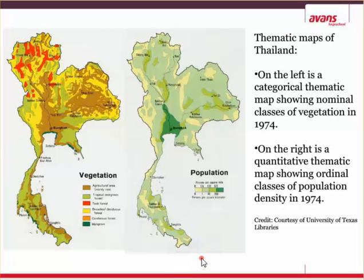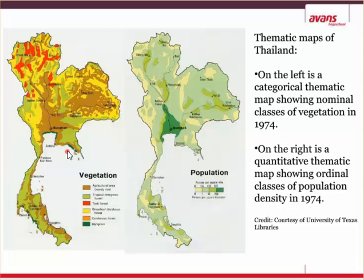Going back to Thailand as our example, here is a thematic map that is very different from the reference map we just saw. On the left, it shows classes of vegetation: brown is agriculture, light green is tropical areas found along the coast and in the center, teak trees which they cultivate, and mangroves in just a very small area. This is a vegetation-themed map.